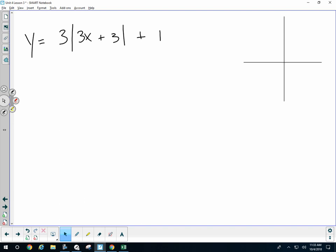Find the vertex. The vertex is when the absolute value equals 0. So you set the absolute value equal to 0.